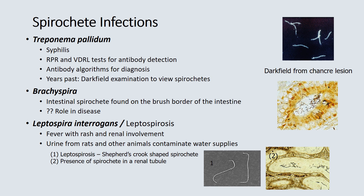Treponema pallidum is the cause of syphilis. RPR and VDRL tests for antibody detection are the tests of choice, with new antibody algorithms to assist with diagnosis. In years past, dark field microscopy was used to view the spirochete in the chancre lesion. Brachyspira is an intestinal spirochete on the brush border of the intestine with a questionable role in disease. Leptospira interrogans is the cause of leptospirosis — a fever with rash and renal involvement associated with contaminated water where rats or animals have urinated. The spirochete has a characteristic shepherd's crook shape with both ends bent.